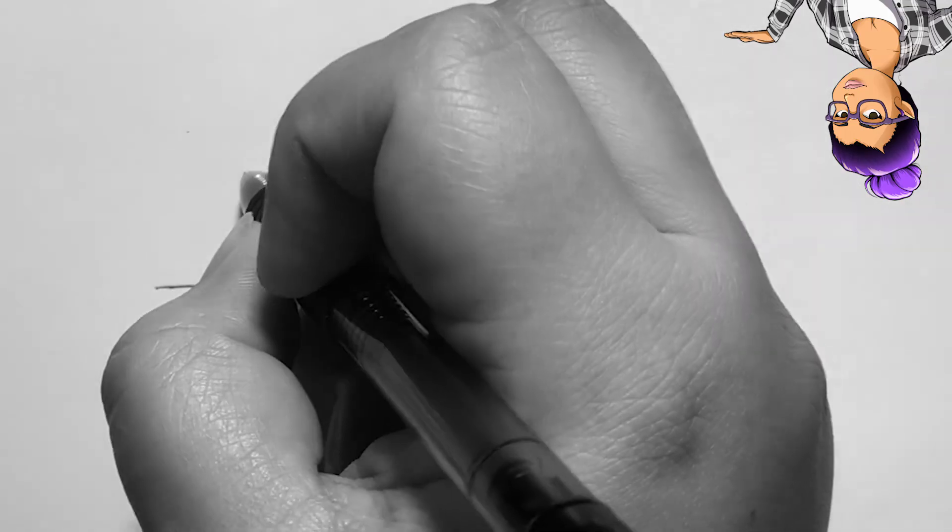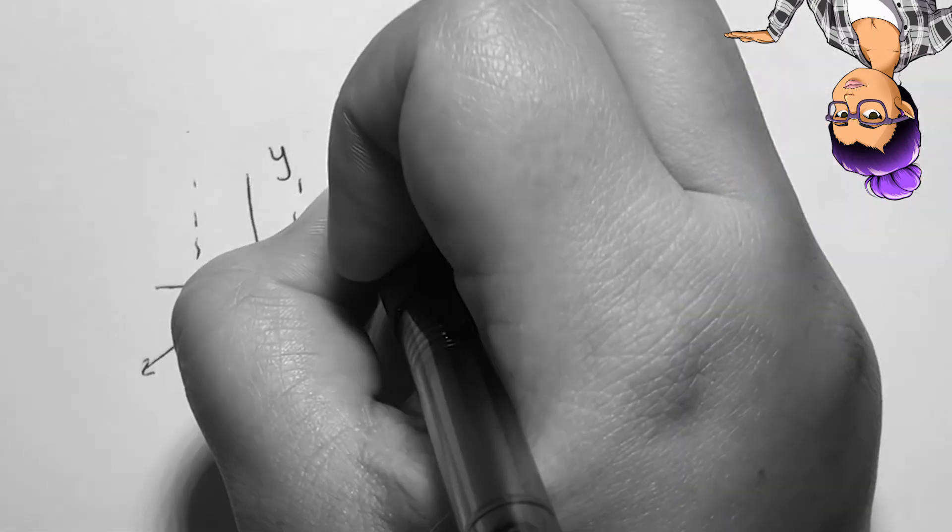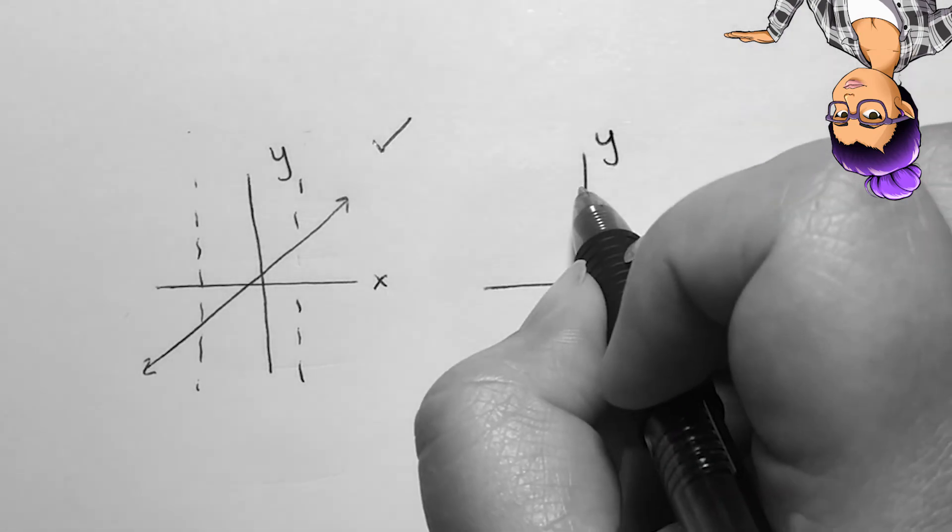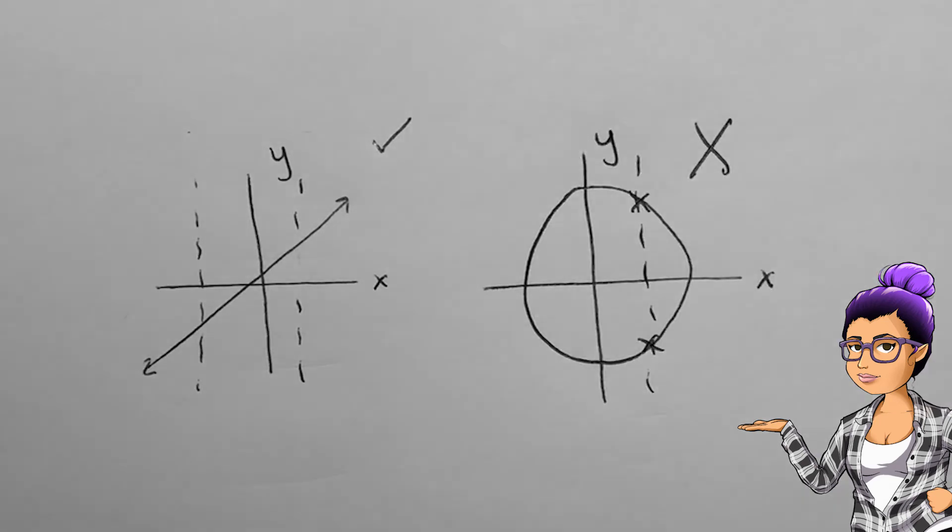In a graph, the strategy used is called the vertical line test. In order for a graph to represent a function, you should be able to draw a vertical line anywhere and intersect the graph up to only once. This graph is a function while this one is not.